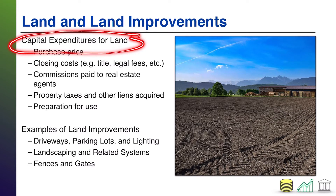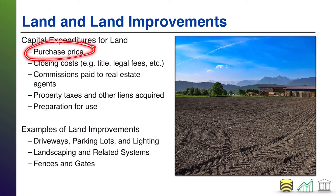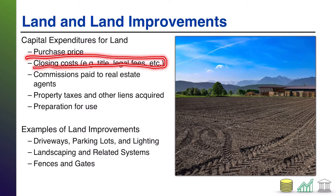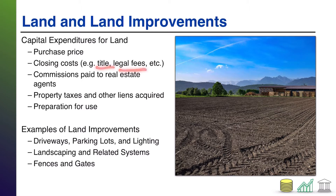So when we talk about land, everyone knows what land is — it's the ground you walk on essentially. Capital expenditures for land are going to include whatever you pay for that land, so that's the price tag. Land, because of it being a real estate item, usually has closing costs: transfer of title, any legal fees, that sort of thing. Also commissions that you pay to real estate agents. Any of that you have to pay as part of closing the deal on the land all counts as part of your historical cost of land and gets capitalized into your land account.